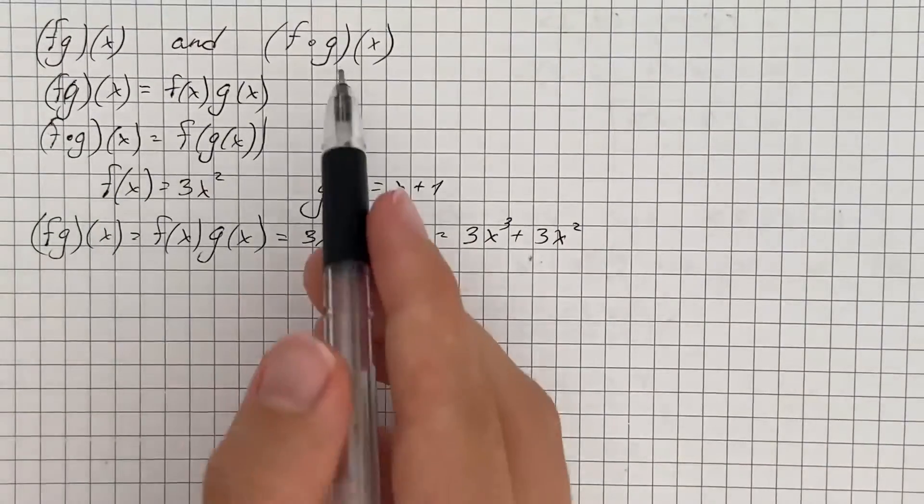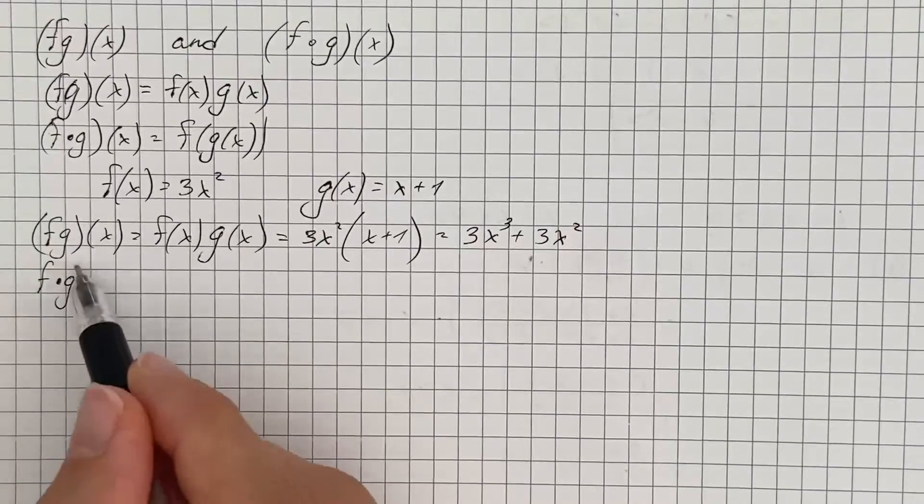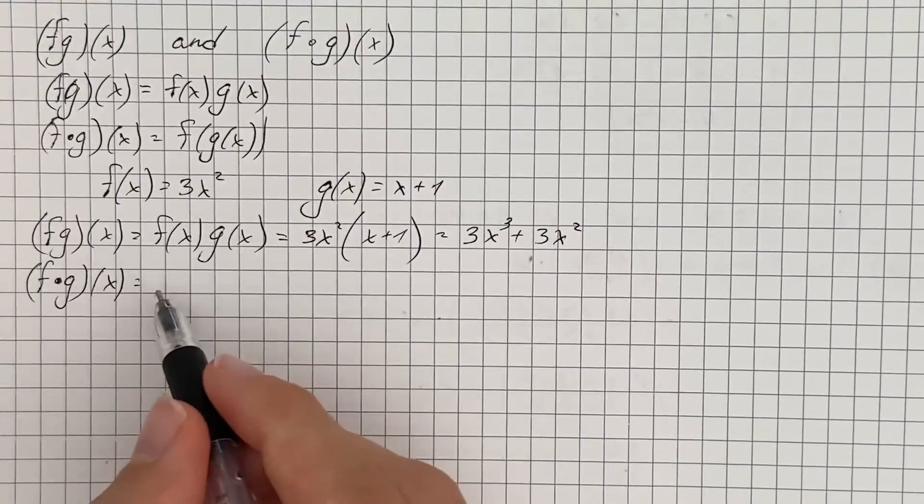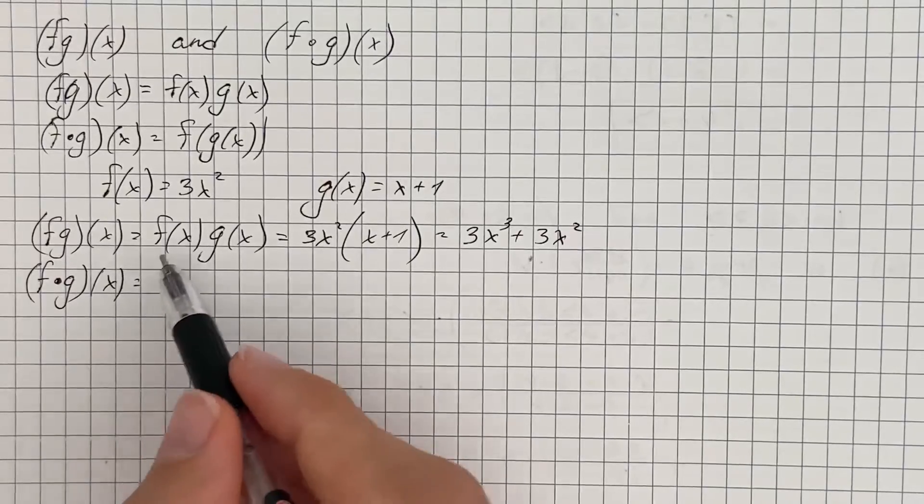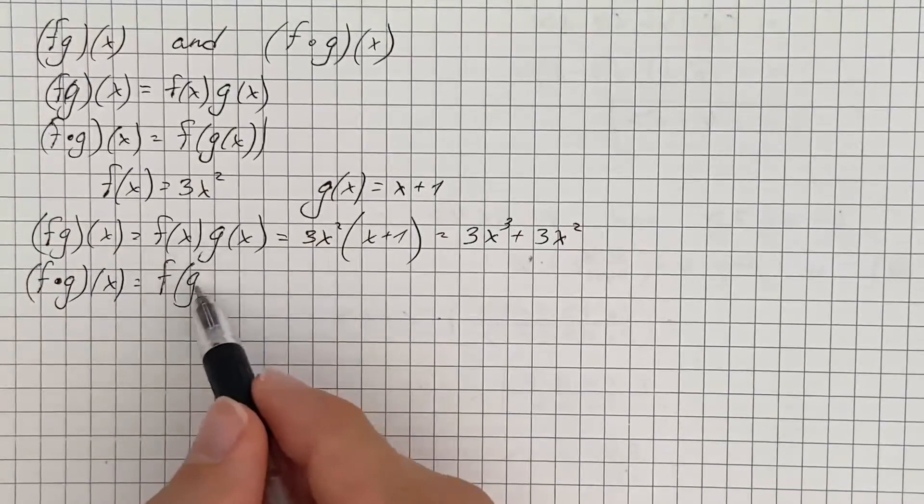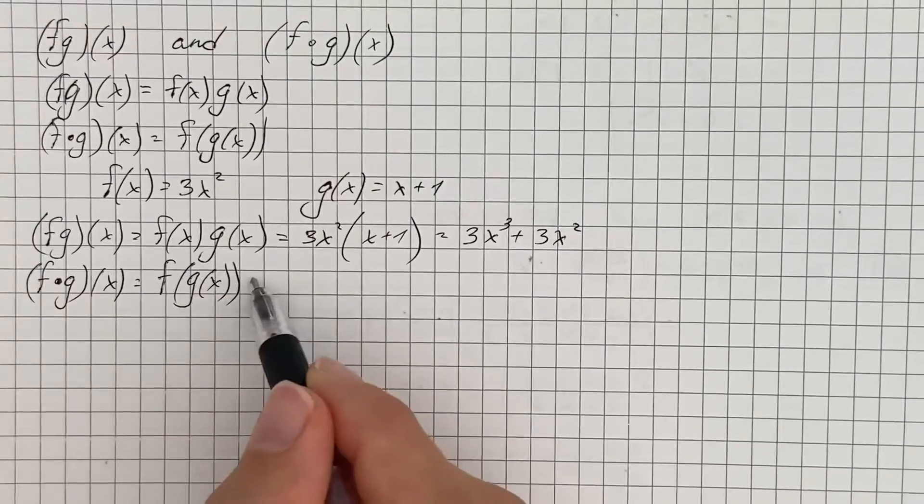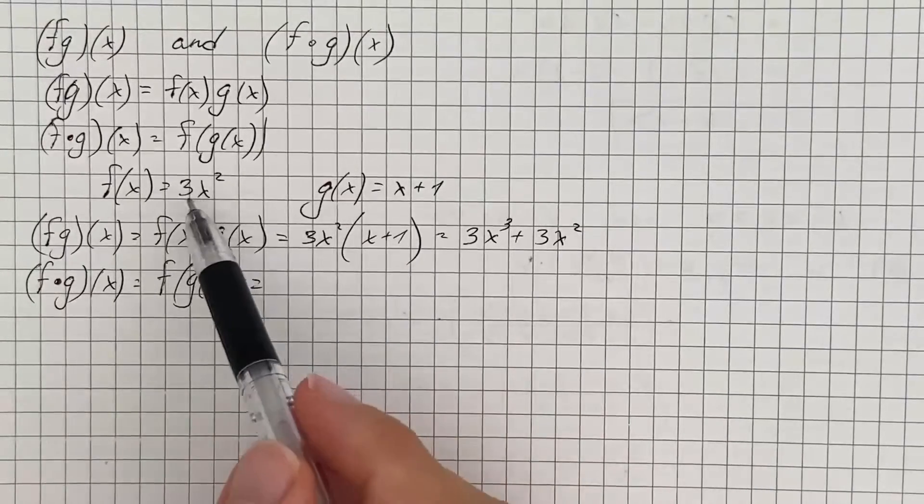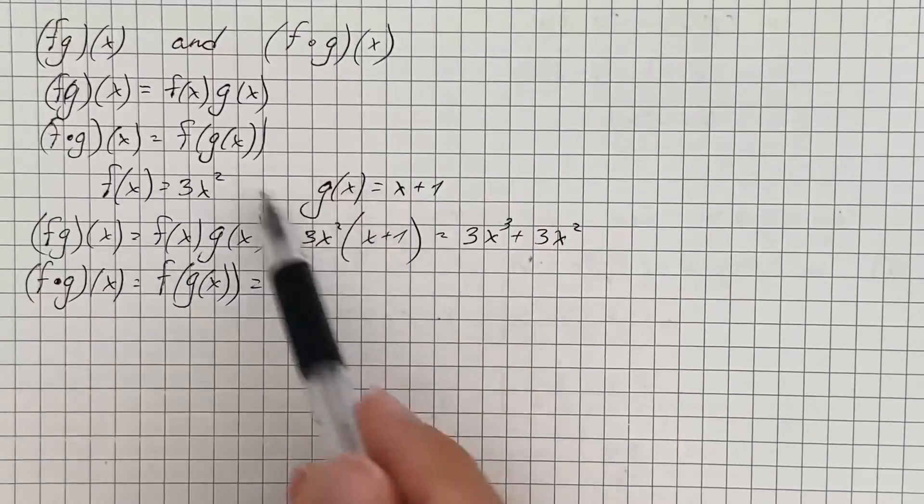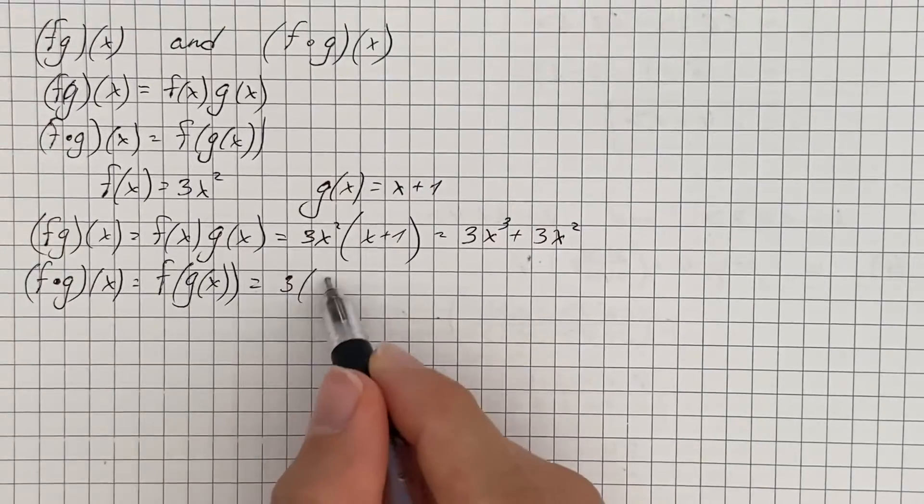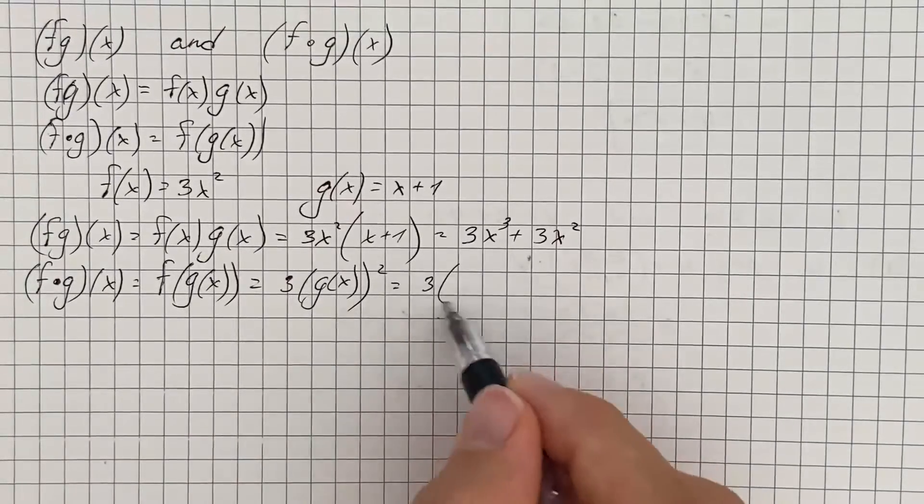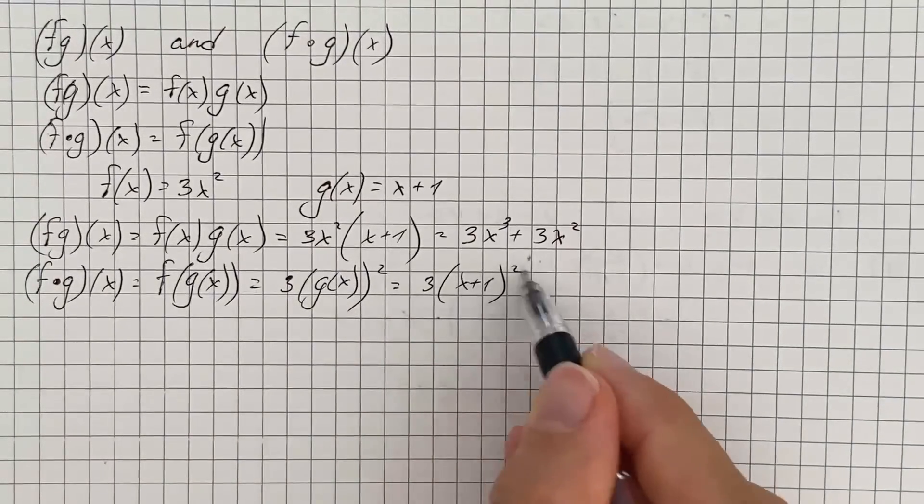If we use the second formula, then we have composite functions, so simply one function which is g inside of another. We substitute instead of x in function f, we substitute g of x and we get 3 times g of x squared. So that's going to be 3 times x plus 1 squared.